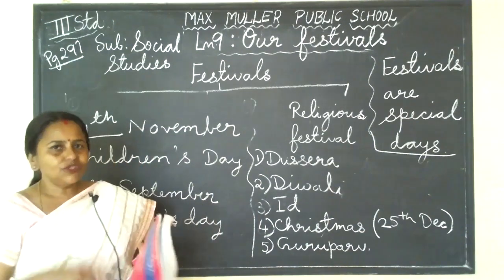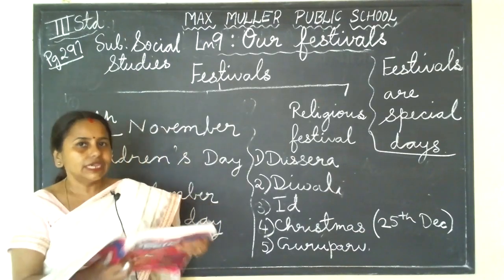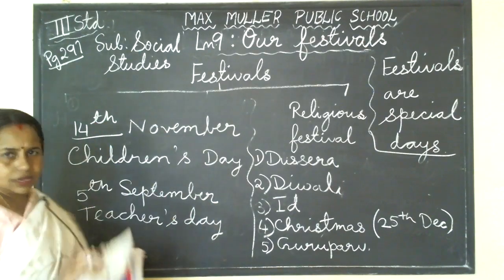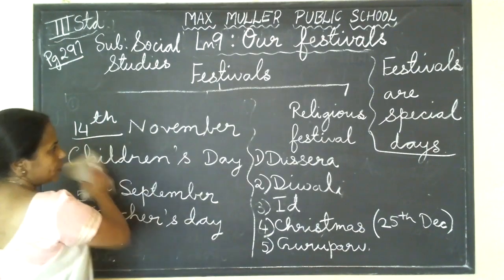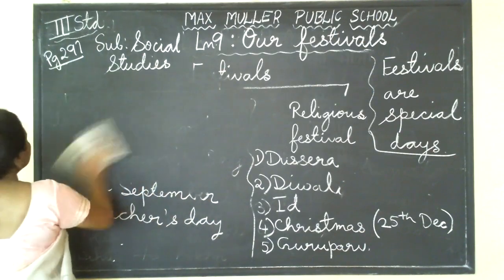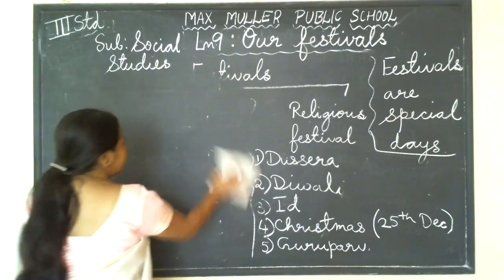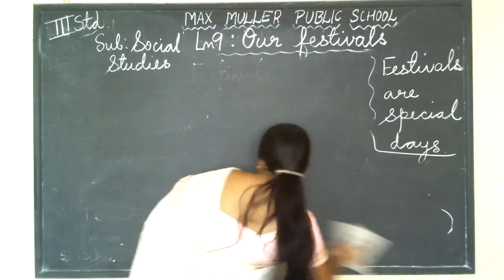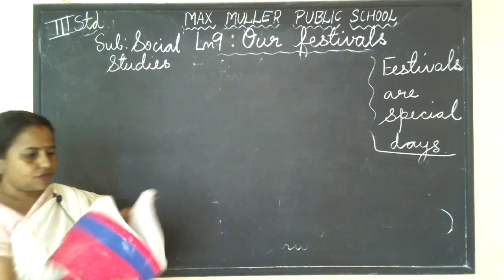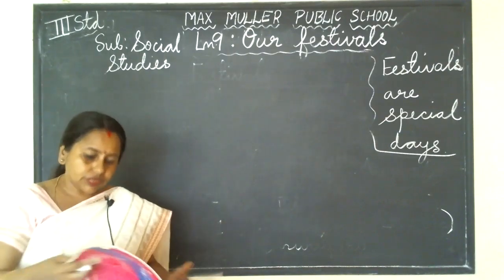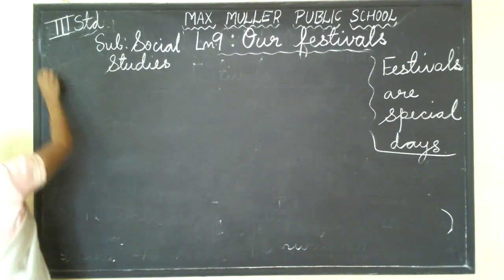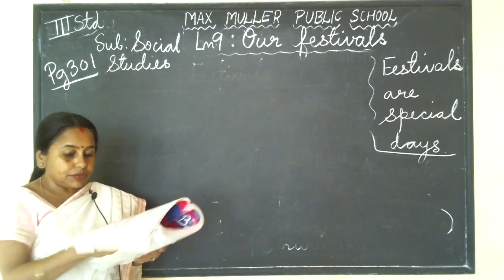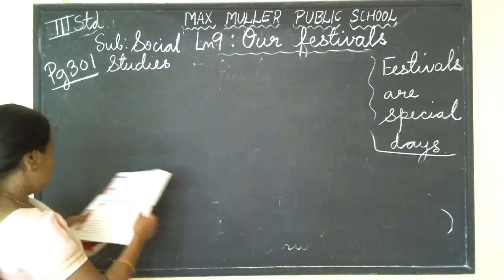Our country is full of festivals — we like to enjoy each moment and each day. Now go to page 301, children. Only two exercises are there and we will finish them. First exercise: write the name of the festival below the date. The dates given are 14th November and 25th December, and others. Write below the date.